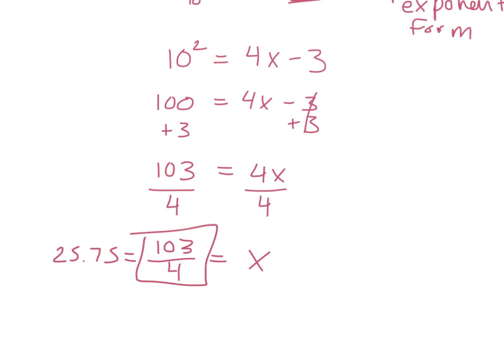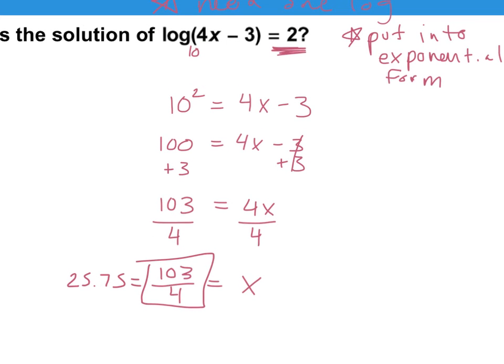Why did we add the 10? Because we didn't have a base here, and when we have a log with no base written, it's called a common log, so it implies that our base is 10. We learned that in section 7.3. So remember, when there's no base written next to your log — no little number written next to it — that means that your base is a 10.